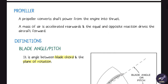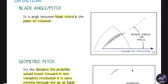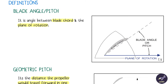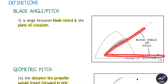Now we look at some definitions related to the propeller. First is blade angle or pitch — it is the angle between the chord line of the blade, also known as blade chord, and the plane of rotation. So between the plane of rotation and the blade chord, you have the blade angle or pitch angle.